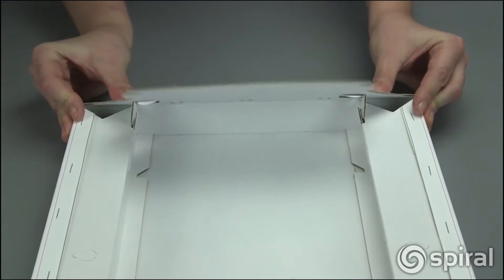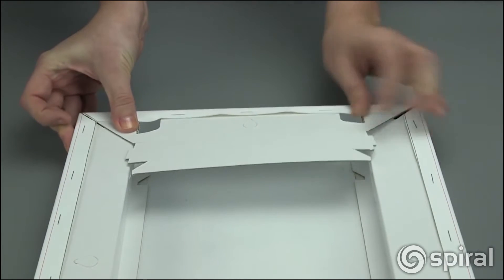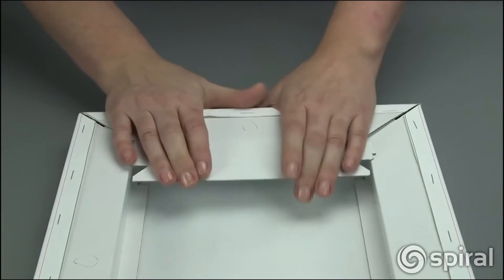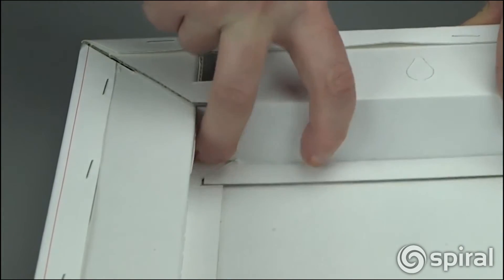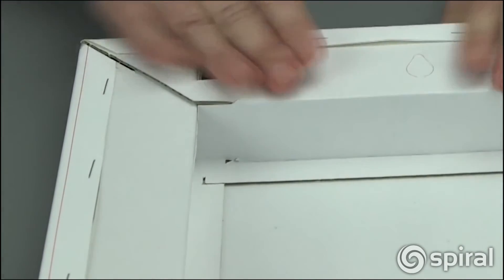Press down, checking you're happy with your corners. Hold in place and then roll the frame edge downwards, clicking the locking tabs into position. Repeat on the opposite side and you're done.